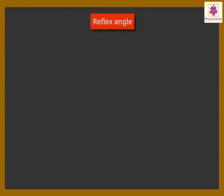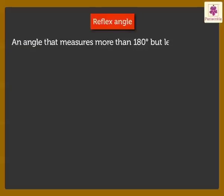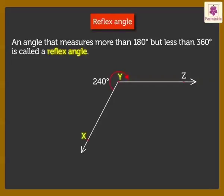An angle that measures more than 180 degrees but less than 360 degrees is called a reflex angle. Here, angle XYZ, shown by the arrow, measures 240 degrees. So, angle XYZ is a reflex angle.